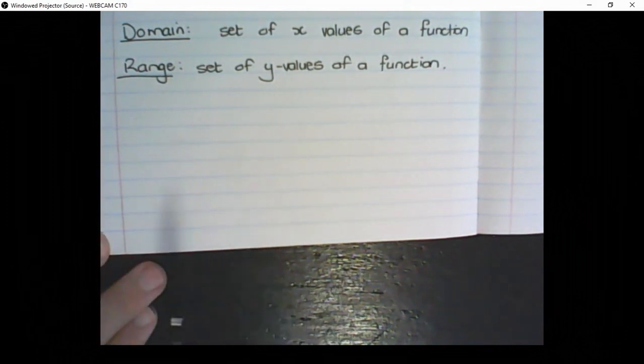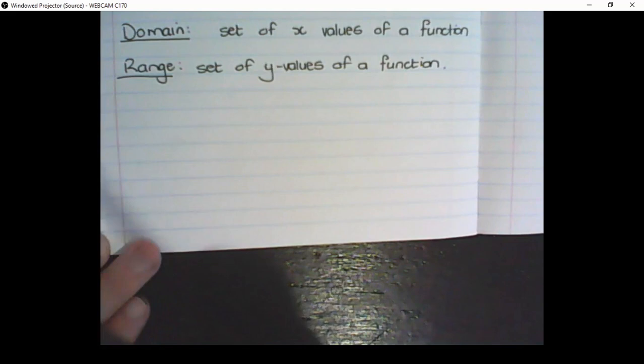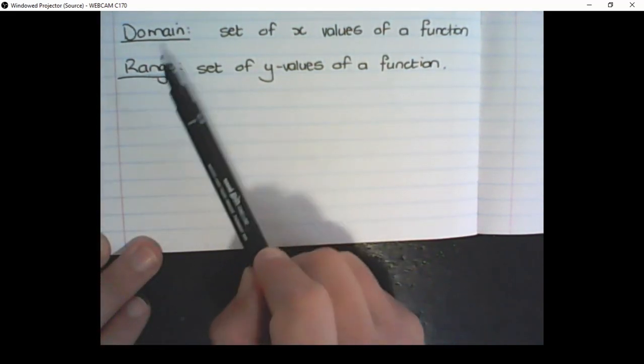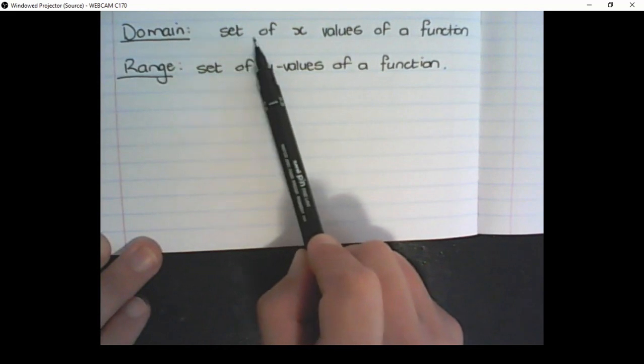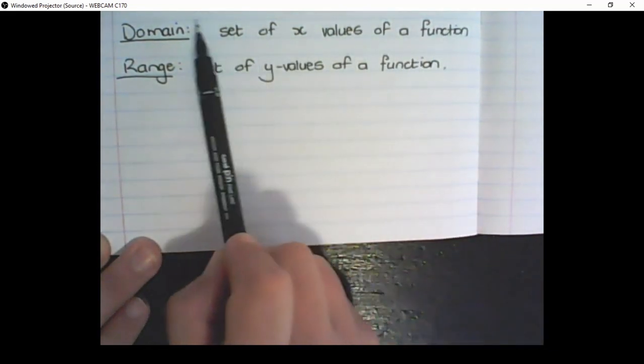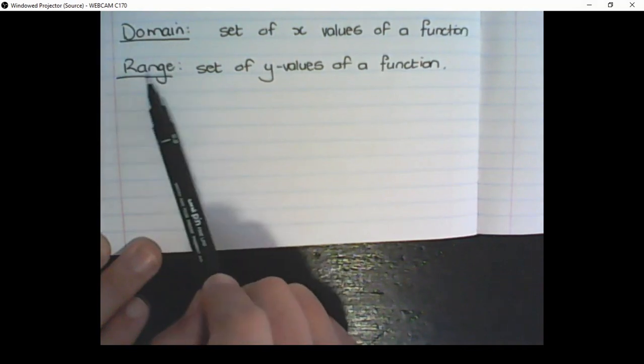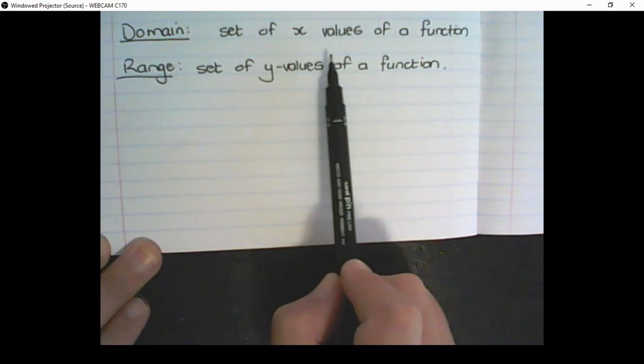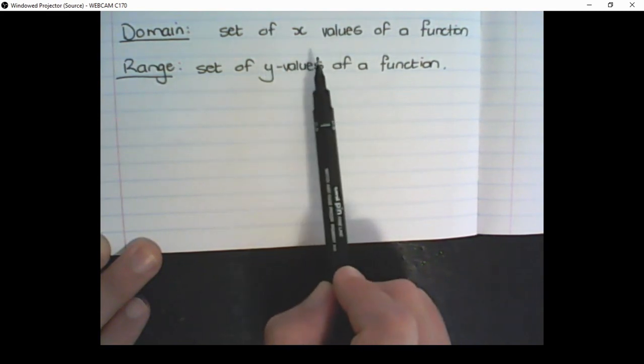Another concept that we learned in grade 10 and 11 was the concept of domain and range. So the domain was the set of x-values of a function, all the possible values of x in that function. And the range was the set of y-values of a function, so all the possible values of y for that specific rule.